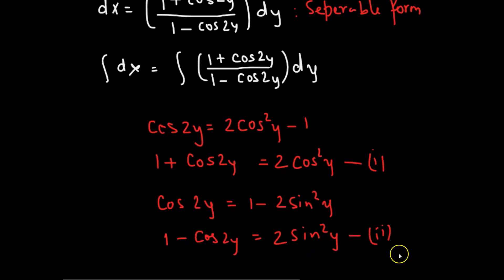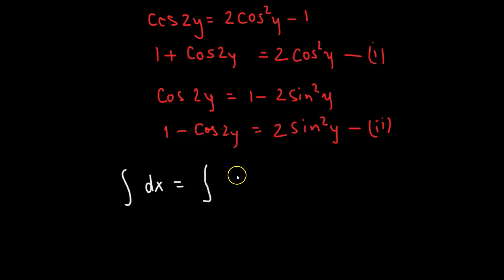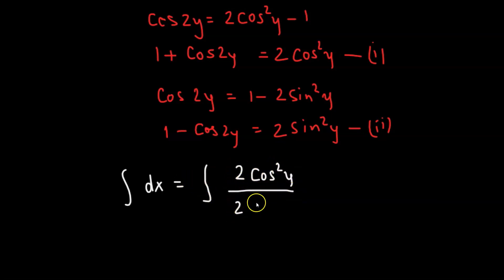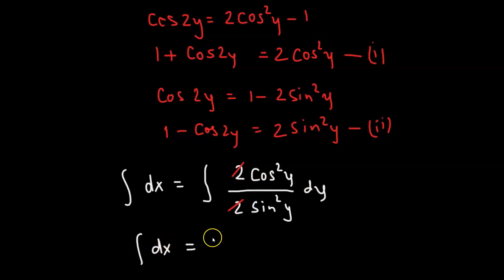So let's substitute these back into our integrand. We get the integral of dx equals the integral of 2 times cosine squared y divided by 2 times sine squared y, dy. The 2s cancel, and cosine squared y divided by sine squared y is cotangent squared y. So we have the integral of cotangent squared y dy.